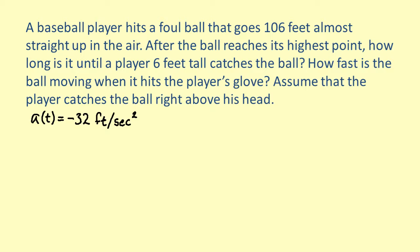Now let's use the relationship between the acceleration, velocity, and position of an object. Acceleration is the derivative of velocity, so v prime is equal to negative 32. If we integrate v prime, we get the velocity. So, v is equal to negative 32t plus some constant c.